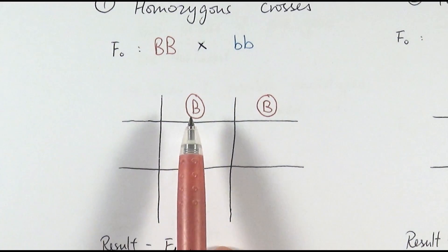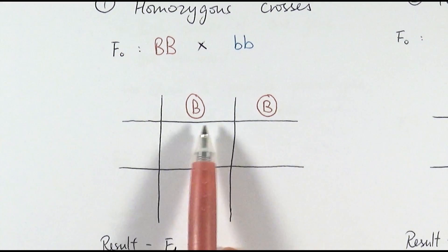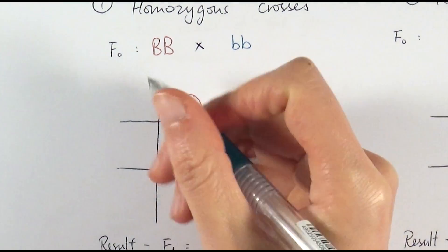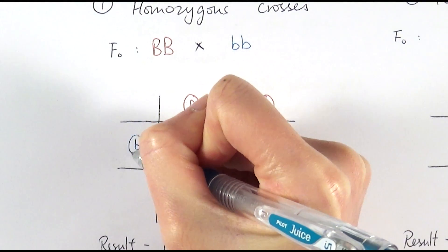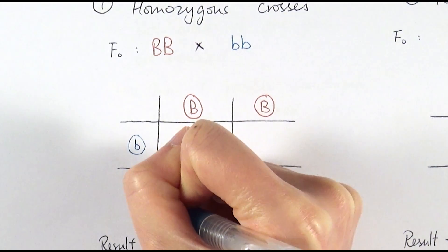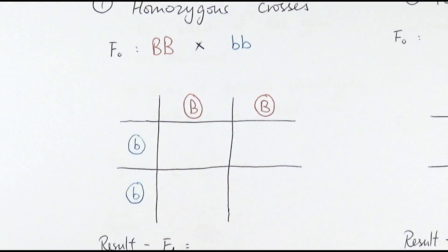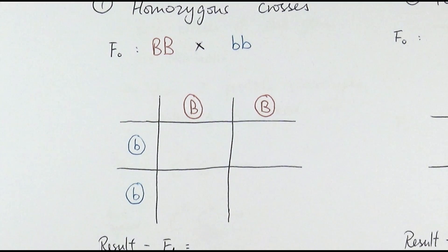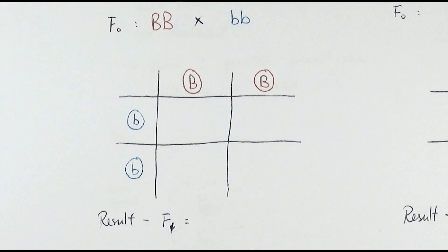If this individual makes gametes, it can make all gametes containing the dominant allele. We use a circle to represent that it is a gamete, not the entire individual. Whereas this other individual would make gametes containing the recessive allele. This is what we call a Punnett square — used to show all possible crosses, all possible genotype offspring, and from that to deduce the phenotype for the offspring.